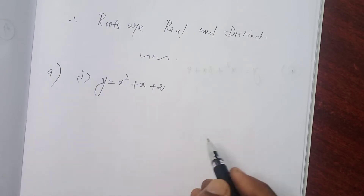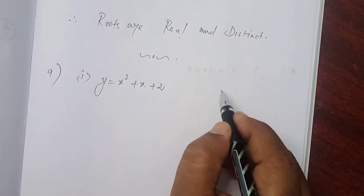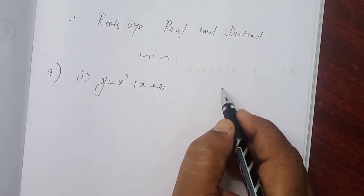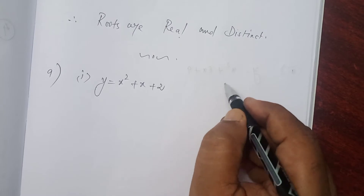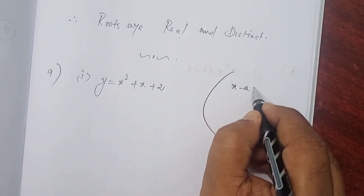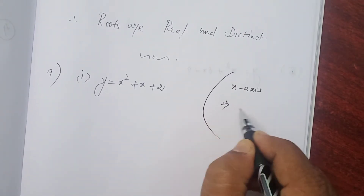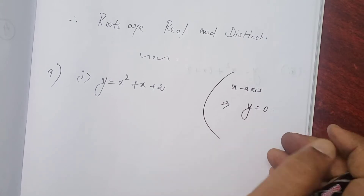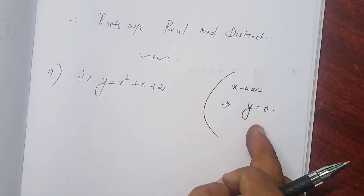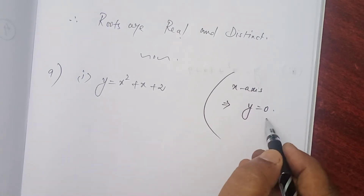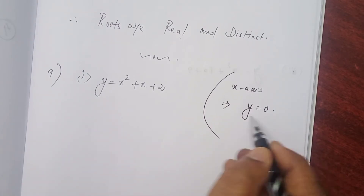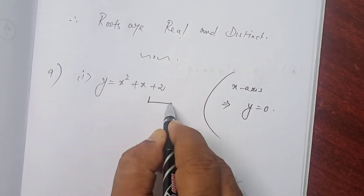Subdivision number 1. We know very well, if the curve intersects the x-axis, the equation of the x-axis will be y = 0. So, substitute y = 0 in equation number 1.